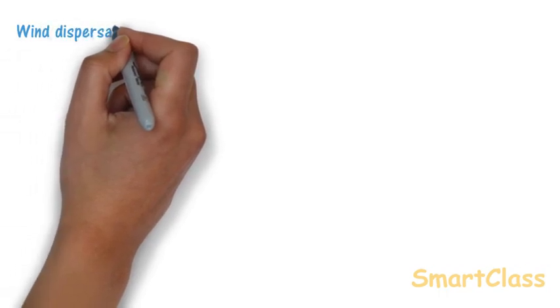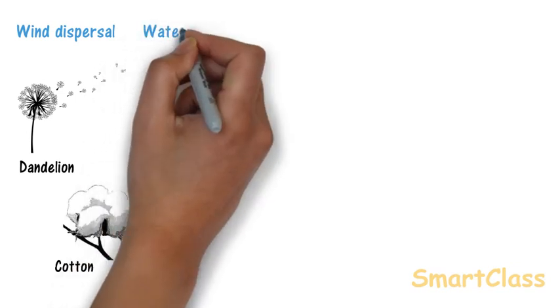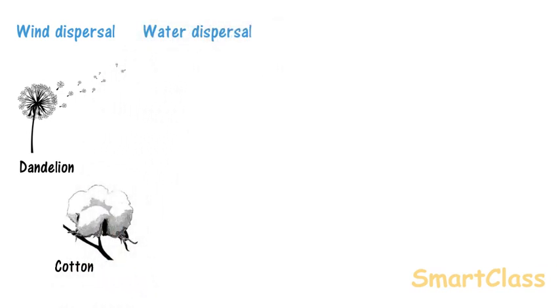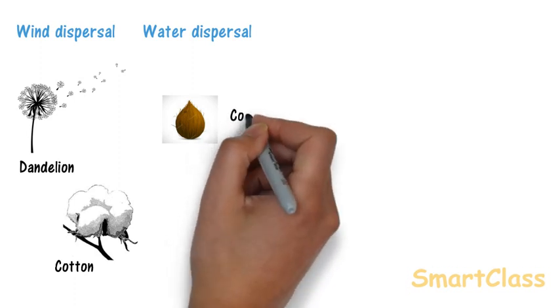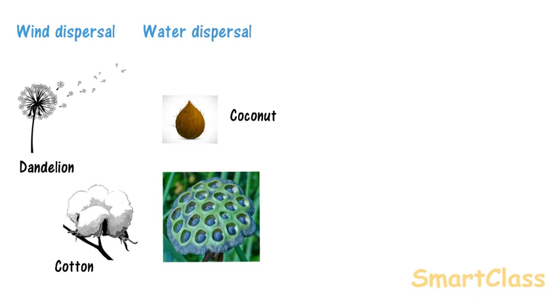Wind dispersion: Small and light seeds are scattered by wind. Dandelion and cotton seeds are scattered through wind. Water dispersion: Seeds of plants that grow near flowing water are usually dispersed by water. Their fruits and seeds can float on water. For example, coconut, which has air trapped in between its husk, which makes it light and easy to float.